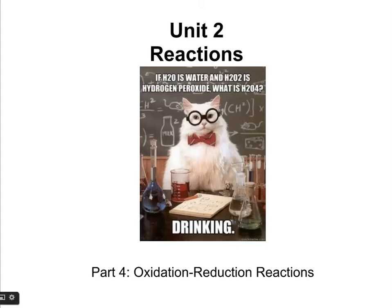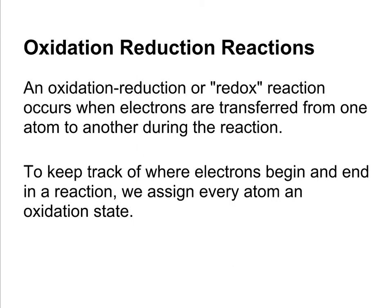Part 4 of Unit 2 is about oxidation-reduction reactions. An oxidation-reduction, or redox, reaction occurs when electrons are transferred from one atom to another during a reaction. In a lot of reactions, electrons stay with their parent atom — the atoms just trade places. But in a redox reaction, not only do atoms trade places, but electrons are transferred also. To keep track of where electrons begin and end in a reaction, we can assign every atom an oxidation state.